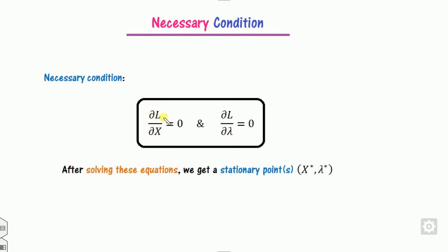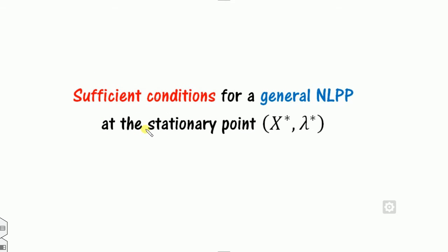Once you convert the problem into the Lagrangian function, the necessary condition for finding the maximum or minimum is that the partial derivative of L with respect to x and lambda must be zero. Solving these equations gives the stationary point. After finding the stationary point, we apply the sufficient condition to check whether the point is a maximum or minimum.